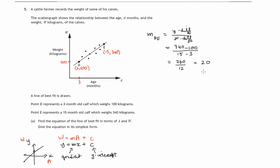Now we do not know where it crosses the w axis. So what we can do is to say what we do know so far is that w equals 20 times a plus c. And it's this c that we've to find out. And we do know (3, 100) lies on this line.